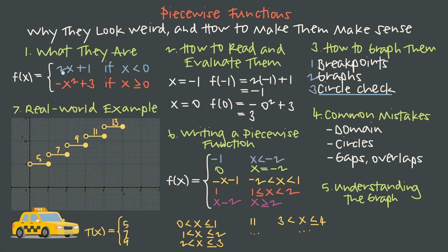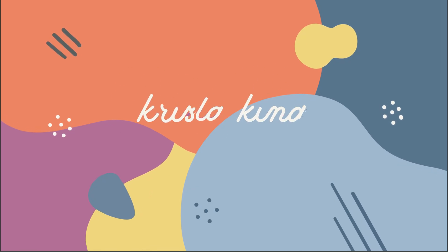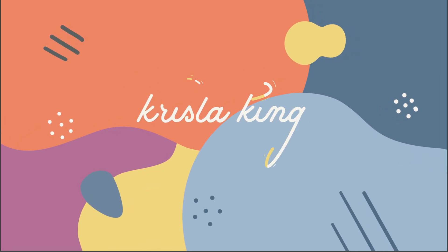So now we know what a piecewise function is, how to read it and match each rule with its condition, how to evaluate it by finding which condition the x value satisfies and using only that rule, how to graph it step-by-step using breakpoints, individual piece sketches, and double-checking circles, how to interpret discontinuities, and how to build a piecewise function from a graph. They might look weird, but they're actually pretty logical once we understand that each line is really nothing more than a matching rule and condition. If this helped and you want to keep building on that understanding, click the link below to head over to the Algebra 2 course.